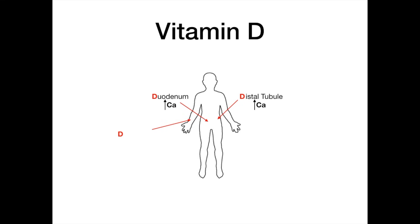The last site where vitamin D acts — pointing to the bone — is that it destroys bone. Destroy begins with D. Vitamin D activates osteoclasts, which are bone resorption cells, therefore releasing calcium from the matrix of the bone. So vitamin D acts in the distal renal tubule, the duodenum, and it destroys bone. All of those things start with the letter D. That's how vitamin D increases calcium — it does it in three different areas. This is very high yield; you need to know all three.